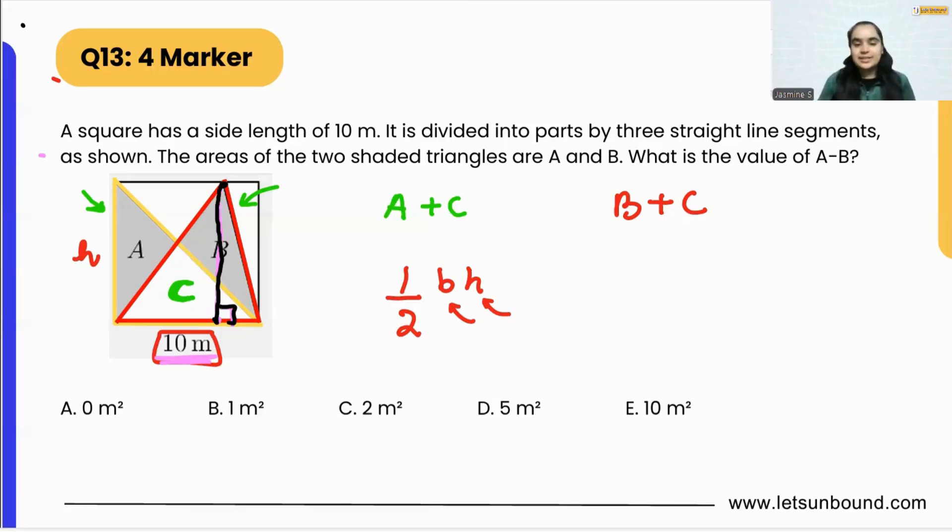So A plus C and B plus C—both triangles have the same base and same height. That means the area A plus C is equivalent to the area B plus C.